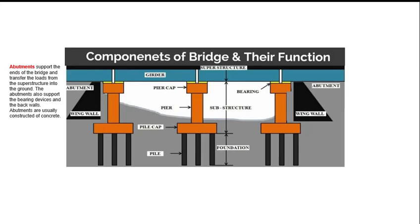An important point to note: a bridge with a single span has two abutments that offer vertical and lateral support. Abutments also play the role of retaining walls to resist lateral movement of the earthen fill of the bridge approach.